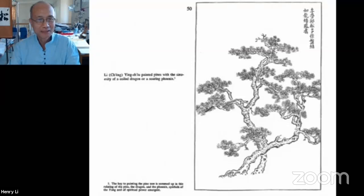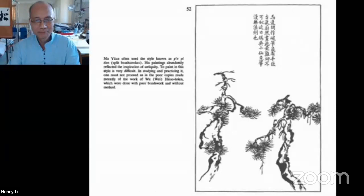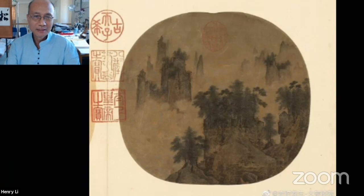This is Li Cheng. Li Cheng is a Northern Song master who started to paint in a theme called 'doubled pines in flat vista.' And this is Li Tang — the master we learned last time — with the axe-cut texture stroke.